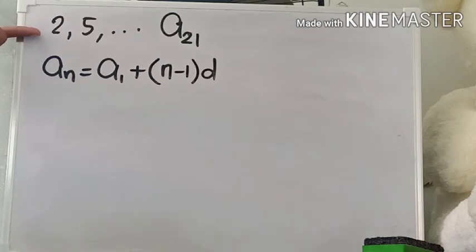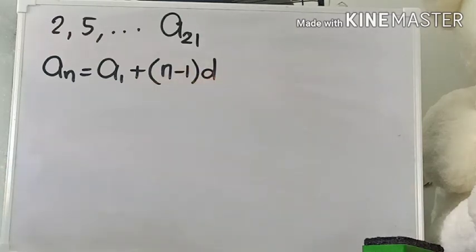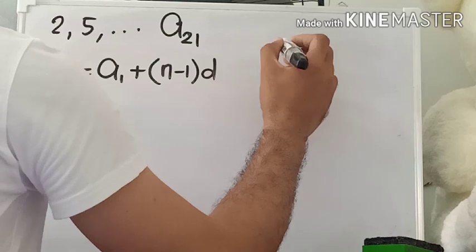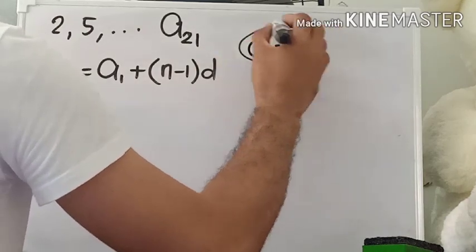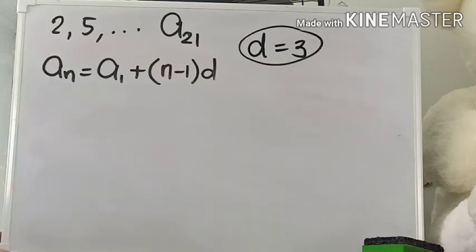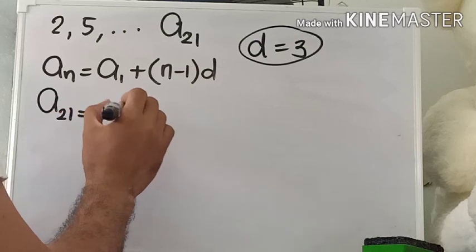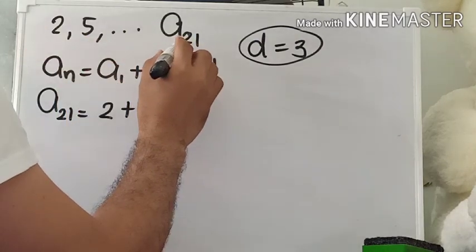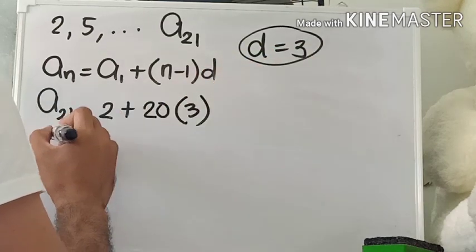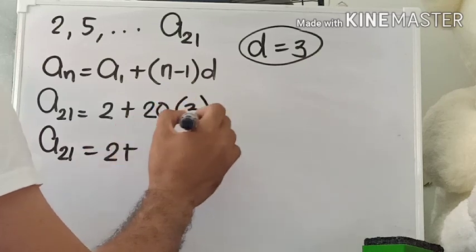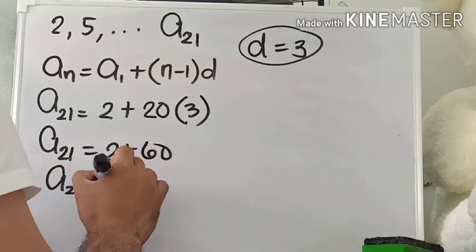We already know the first term is 2, and n = 21 since we are looking for the 21st term. The common difference is found by subtracting a term from the one that follows: 5 minus 2 equals 3. Plugging into the formula: 21st term = 2 + (21 − 1) × 3 = 2 + 20 × 3 = 2 + 60 = 62. So the solution is 62.